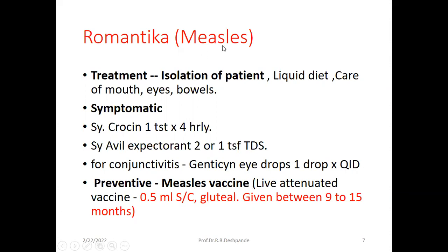How to prevent measles? Measles can be prevented by giving the measles vaccine. This is a live attenuated vaccine, 0.5 ml subcutaneous in the gluteal region, given between 9 to 15 months of age. The child must receive this measles vaccine at a very early stage of life.